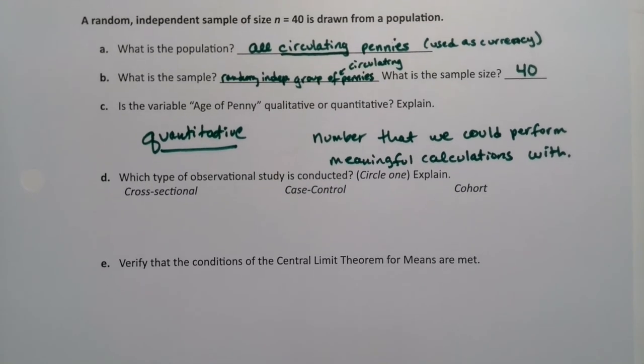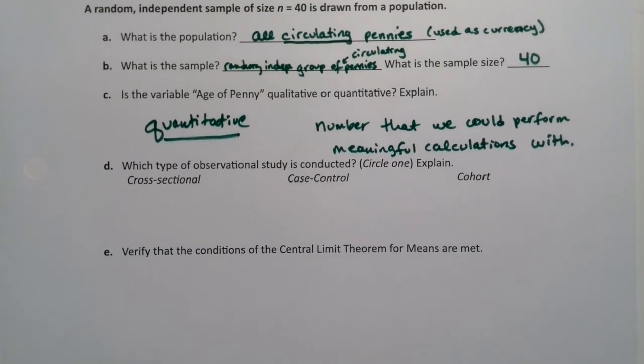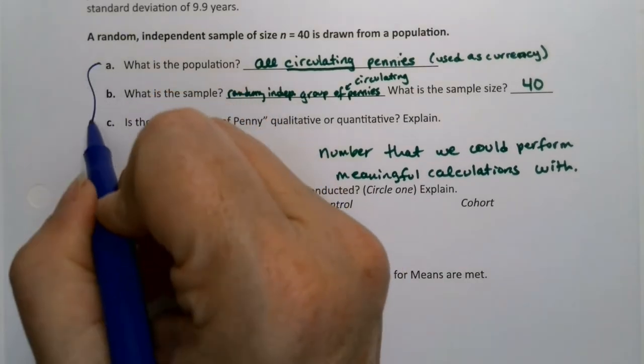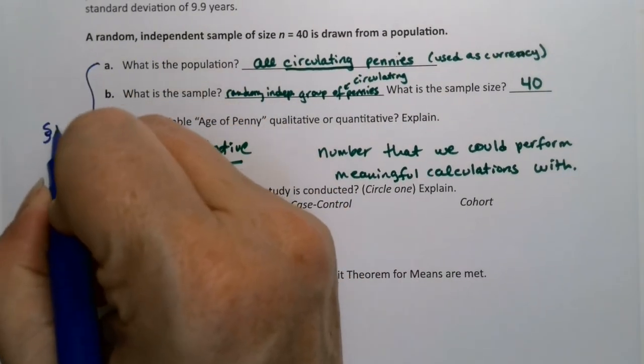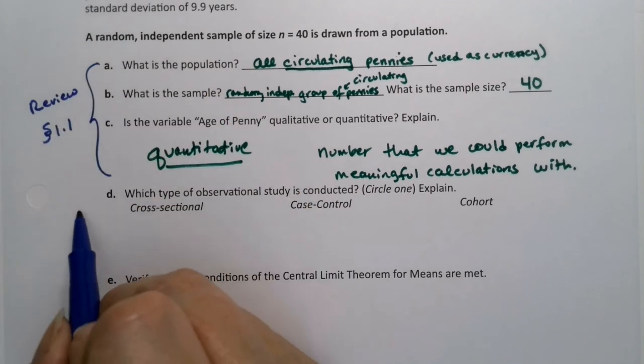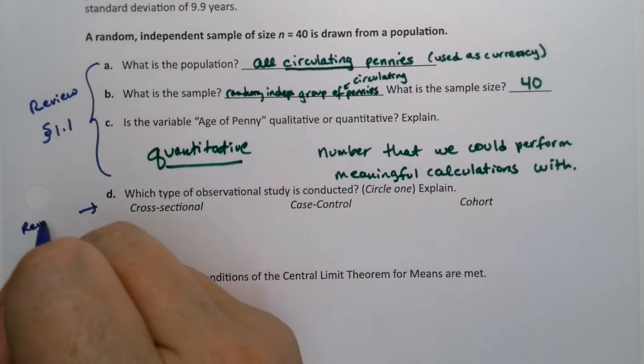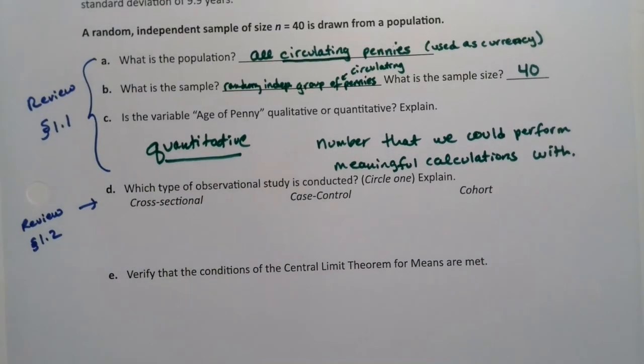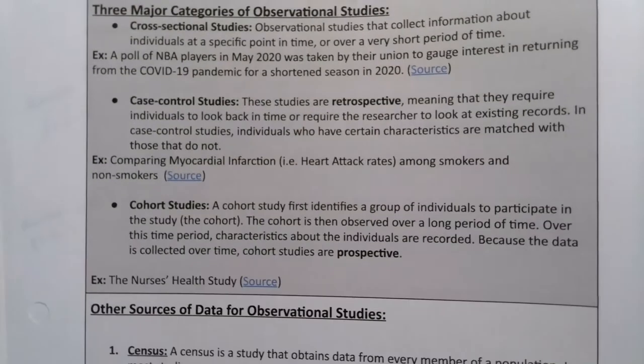Now, which type of observational study is being conducted? That is a blast from the past. That is from section 1.2. So quantitative and qualitative and sample and all of that, all of this is from section 1.1. So this is review. And this question right here is a review of terms that we learned in section 1.2.